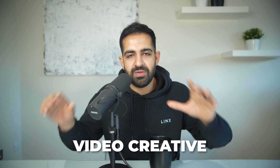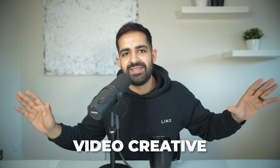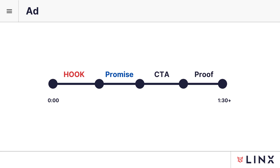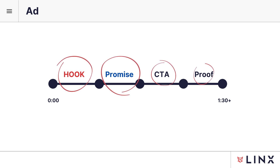With a proper funnel in place, we can move on to the video creative — the actual ads themselves. For the purposes of lead gen campaigns, we've stripped the ad structure down to four key elements: the hook, the promise, the call to action, and the proof.